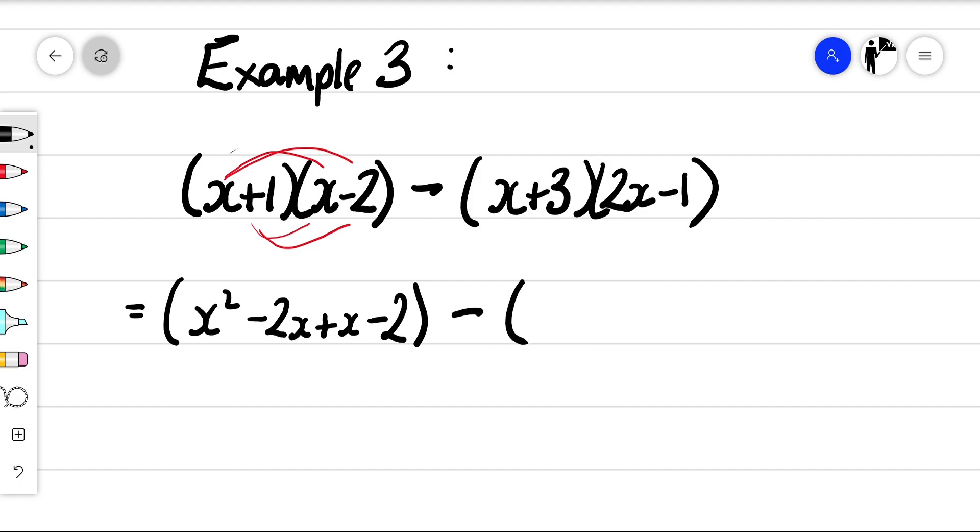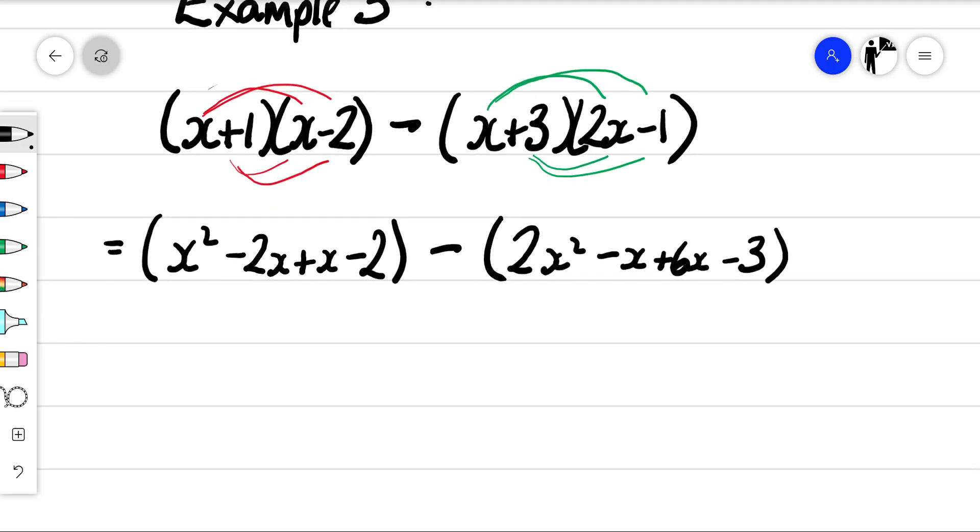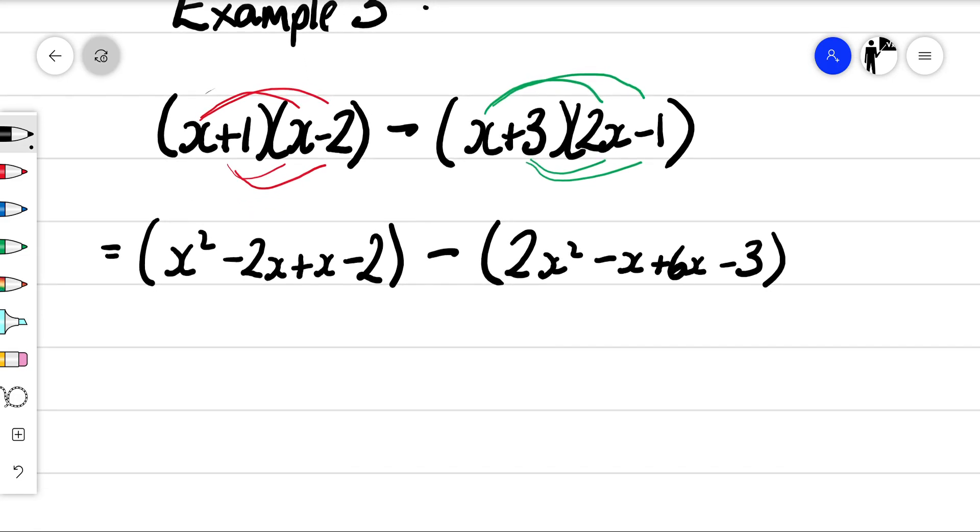and I'm going to subtract, and we'll multiply this one out now. 2x squared plus 6x minus 3. So we've multiplied out both brackets.